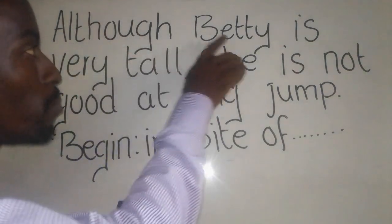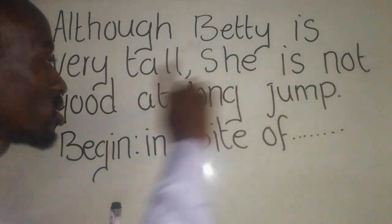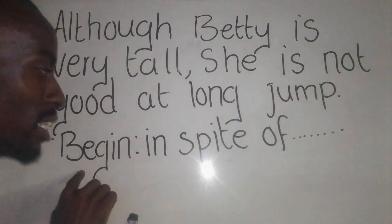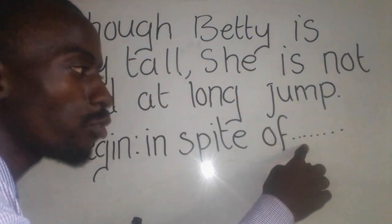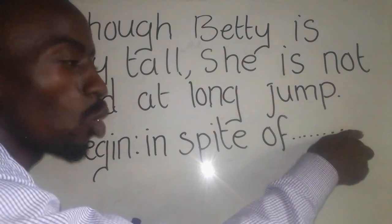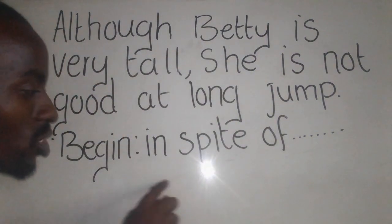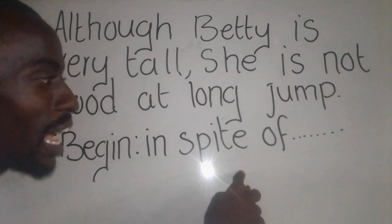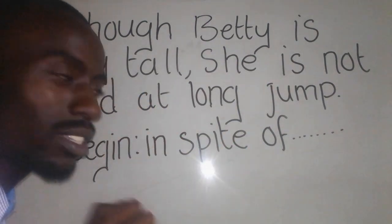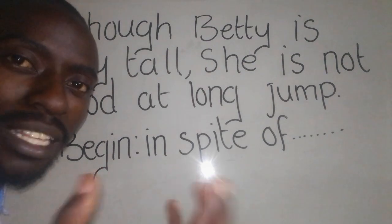Although Beth is very tall, she is not good at long jump. Begin in spite of: 'Beth is not good at long jump.' But you need to take note that when you're writing here, it depends on the tense.